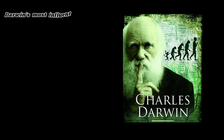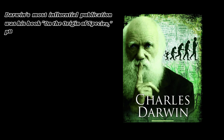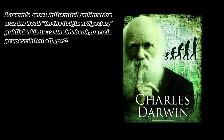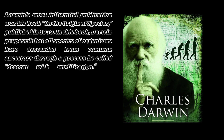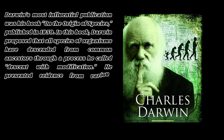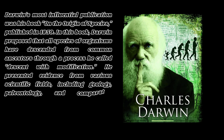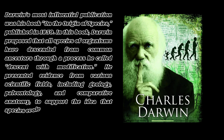Darwin's most influential publication was his book On the Origin of Species, published in 1859. In this book, Darwin proposed that all species of organisms have descended from common ancestors through a process he called descent with modification. He presented evidence from various scientific fields, including geology, paleontology, and comparative anatomy, to support the idea that species evolve over time.